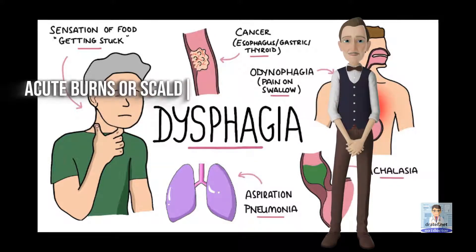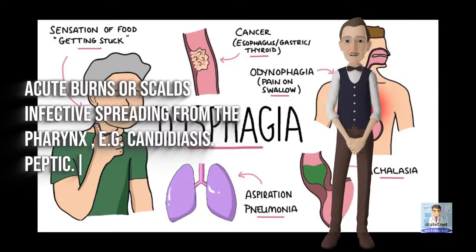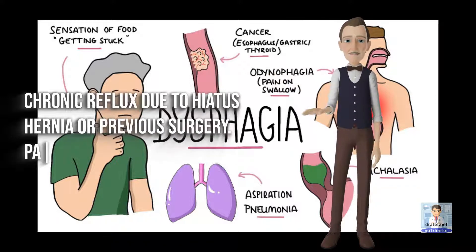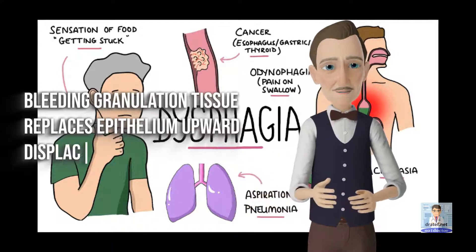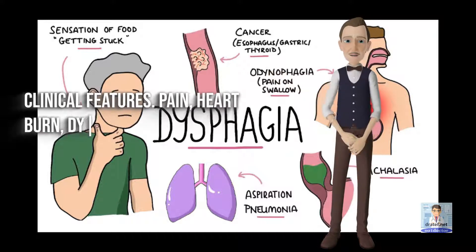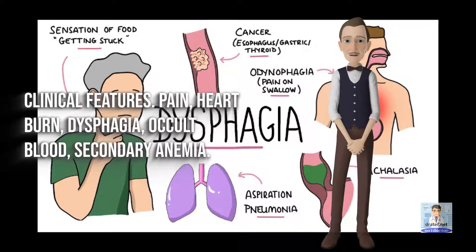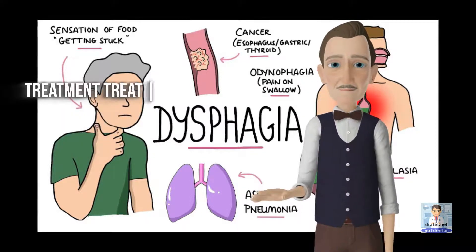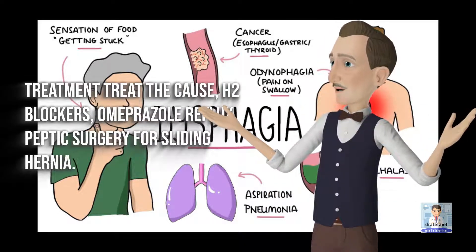Esophagitis: Acute — burns or infective, spreading from the pharynx, e.g., candidiasis. Peptic — chronic reflux due to hiatus hernia or previous surgery. Pathology: bleeding granulation tissue replaces epithelium with upward displacement of the cardia. Clinical features: pain, heartburn, dysphagia, occult blood, and secondary anemia. Diagnosis: barium swallow, esophagoscopy. Treatment: treat the cause, H2 blockers, omeprazole for reflux, and surgery for sliding hernia.